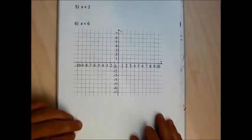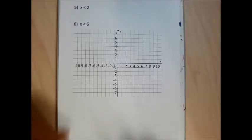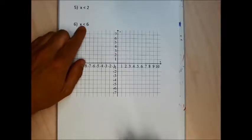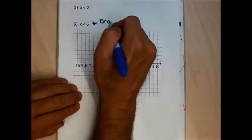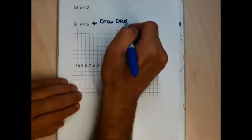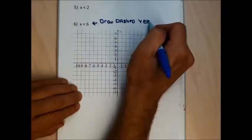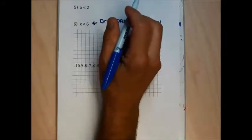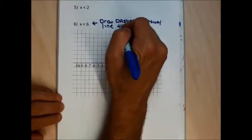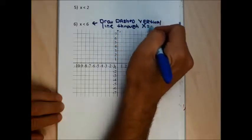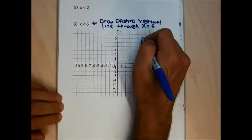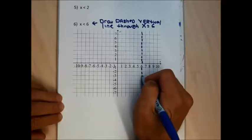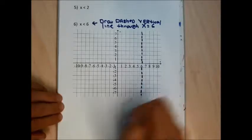Problems 5 and 6 have less than signs without or-equal-to's. For problem 6, I want to identify all the points with x-coordinates equal to 6, but I don't want to include those in my answer, so I'll start by drawing a dashed vertical line through 6. This identifies every point on the graph with an x-coordinate equal to 6, and the dashed line makes those points not part of my answer.